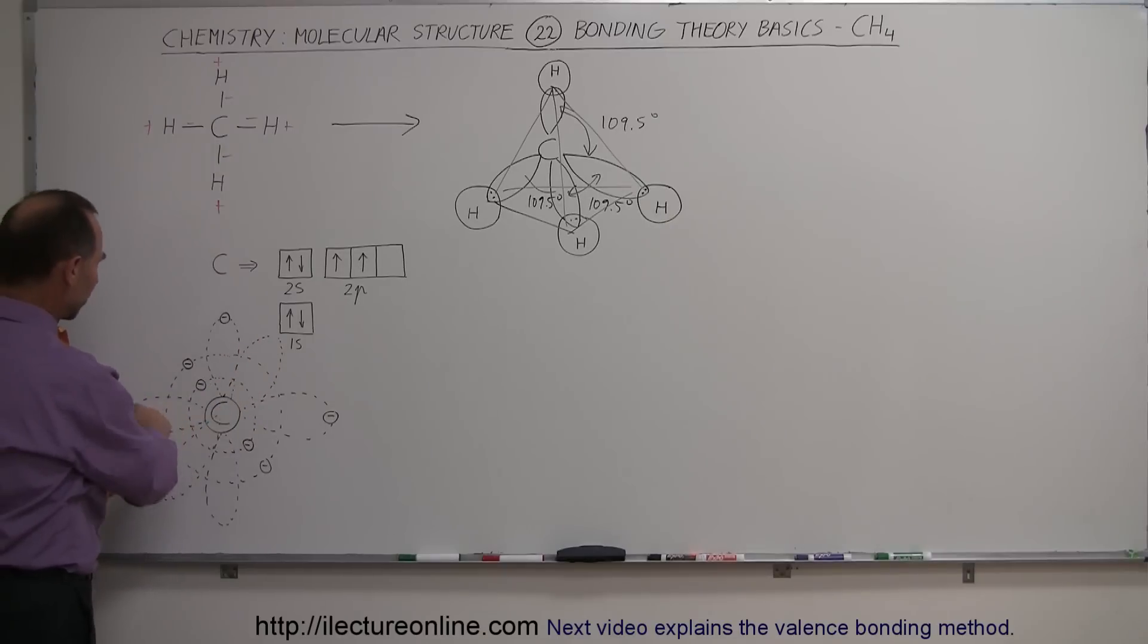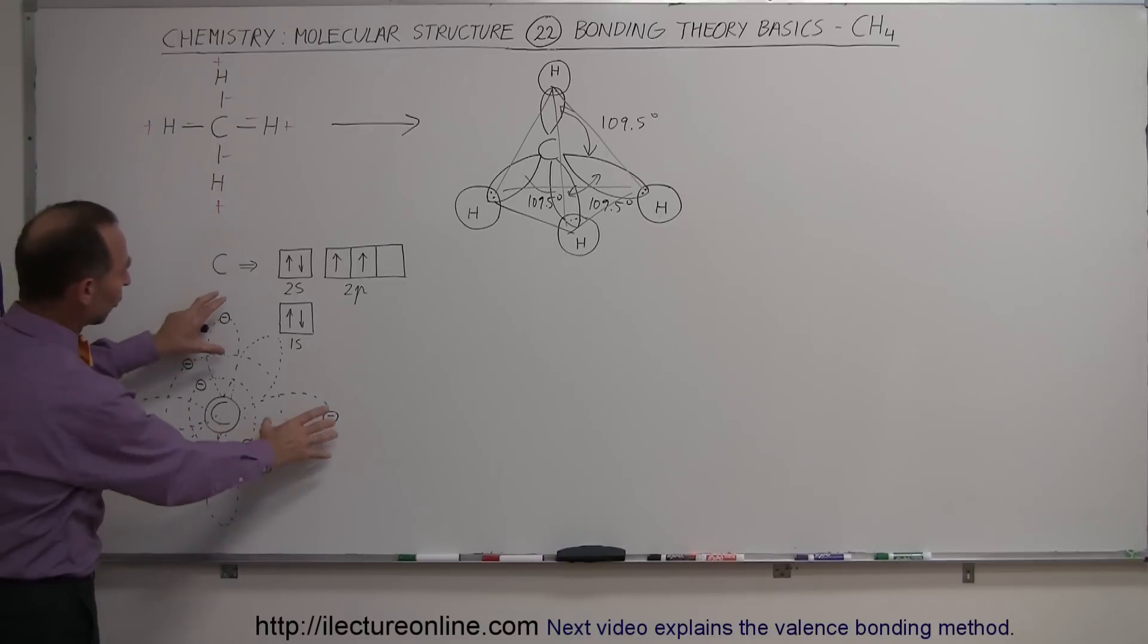Then you have the three p orbitals: one in the y direction, one in the x direction, one in the z direction. Only two of those three can have a single electron in them. So I just arbitrarily chose this orbital and that orbital right there. You would think that those are the two orbitals that are going to be used in bonding.